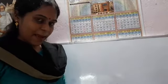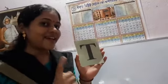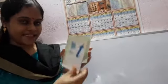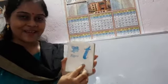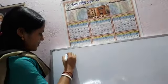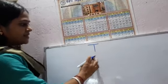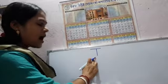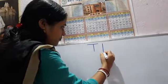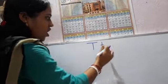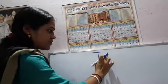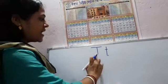The next letter after S is T. This is capital T, and this is small t. Let's write the letter T. First, a sleeping line, then a standing line — this is capital T or uppercase T. And this is small t or lowercase t. Just put a line across it.